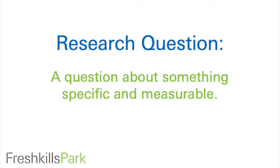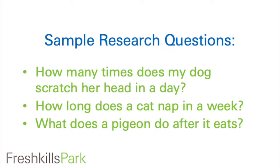Your next step is to develop a research question. What are you curious about? Think about the different animal behaviors. Remember, a good research question asks something specific and measurable. With an ethogram, you can answer questions about how many times an animal does a particular behavior, how much time is spent doing different activities, or what behaviors tend to happen before or after others.